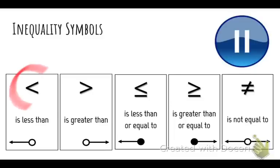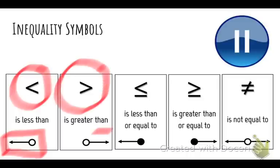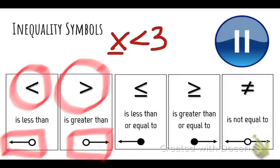The first one is 'less than.' When graphing, it's important to note that there is an open circle. 'Greater than' is the next one, and again, when graphing you also use an open circle. If your variable is on the left, 'less than' should graph to the left and 'greater than' should graph to the right — for example, x is less than 3.